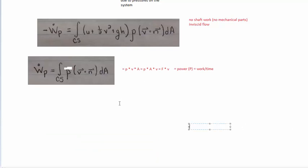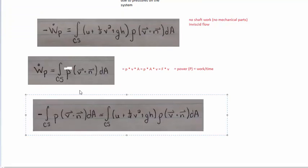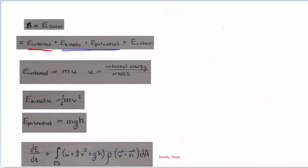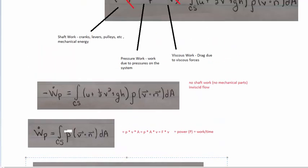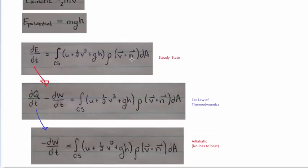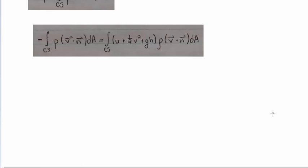In past derivations for linear and angular momentum, I asked whether the transport equation was scalar or vector. Mass conservation was scalar, linear and angular momentum were vector equations. Here you'll notice this is all scalar — energy is a scalar, and each of the three energy terms turns out to be scalar. So the energy equation is going to be a scalar equation, which is a little bit easier to deal with since you don't have to worry about vector directions.